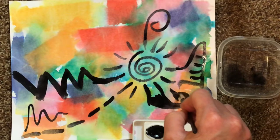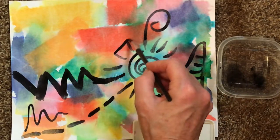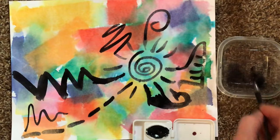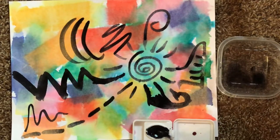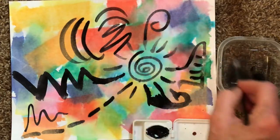Notice some of my lines are much thicker than others. Try that in your painting. Try zigzag, spiral, wavy, dotted lines, repeated lines, curved lines, and fill them in with black paint. Fill your whole page.